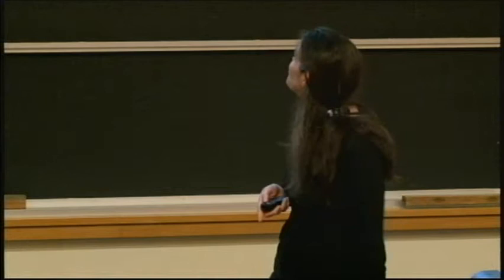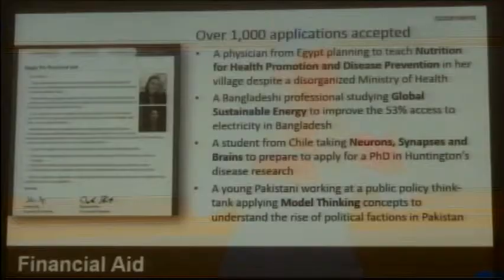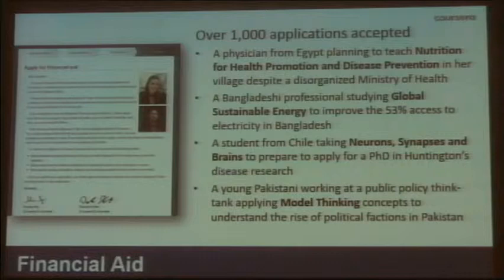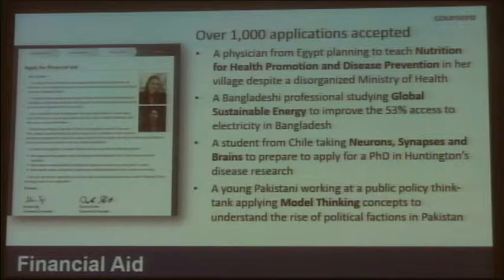The signature track does cost money. There's a human in the loop who has to look at the webcam photo and so on. It's not hugely expensive — it costs about $50, and it's entirely optional. But because there are a lot of students for whom $50 is actually a lot of money, especially in other parts of the world, we put in place a financial aid program — basically a waiver of the fee. We have given well over 1,000 of these financial aid awards to people around the world, including a professional in Bangladesh taking the energy class to address the fact that half the students in his country don't have electricity, and a student in Chile taking the neurons, synapses, and brains class from the Hebrew University to apply for PhD programs to study Huntington's disease.